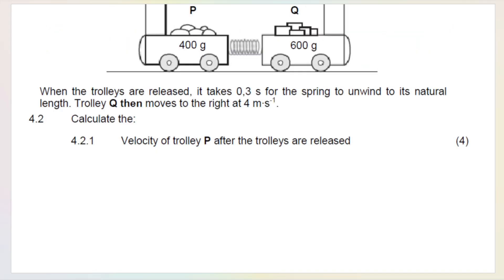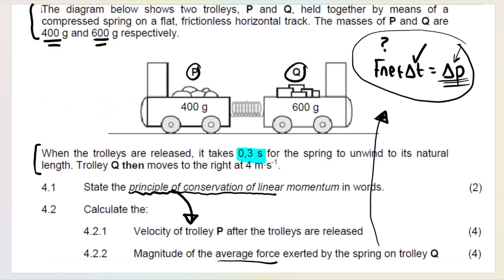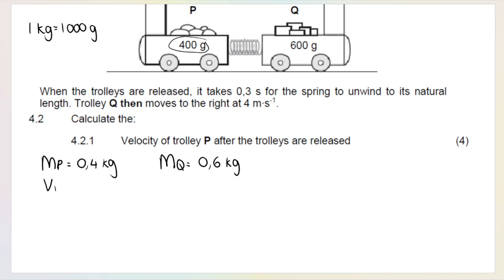Now list your variables — this is very helpful. The mass of P: we need to convert to kilograms. One kilogram equals 1000 grams, so we divide by 1000. Mass of P = 0.4 kg; mass of Q = 0.6 kg. Reading the situation again carefully: the spring holds them together, and when the trolleys are released, both trolleys are initially not moving. The initial velocity of both trolleys is zero.